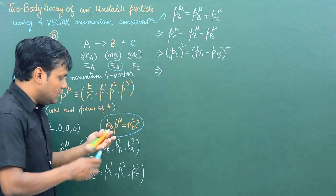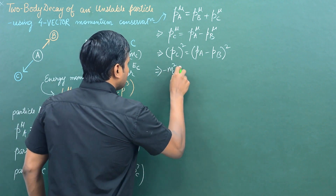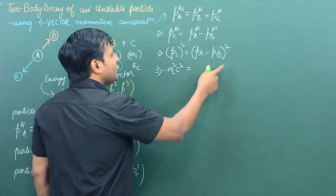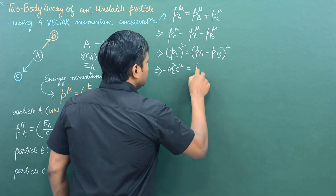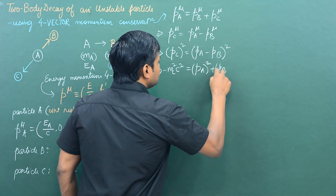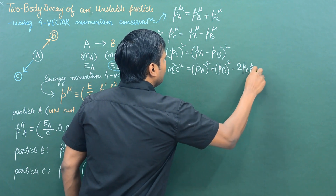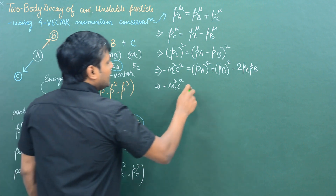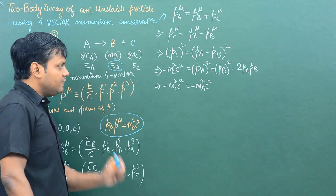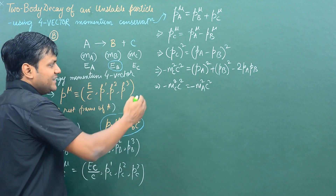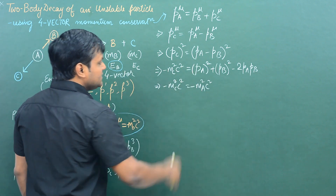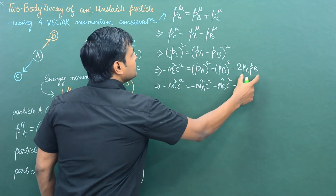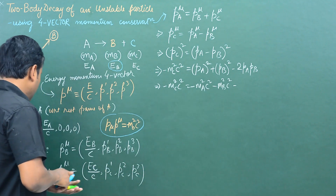So for the magnitude squared of PC, we can write minus MC² c². The right-hand side gives PA² + PB² − 2·PA·PB. Substituting the magnitudes: minus MC² c² equals PA² (which is minus MA² c²) plus PB² (which is minus MB² c²) minus 2·PA·PB. The term 2·PA·PB is what I'm interested in figuring out.